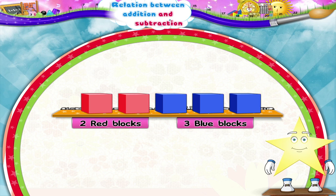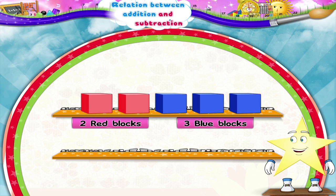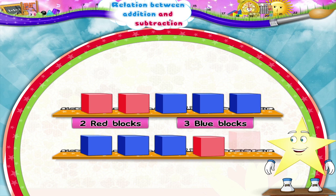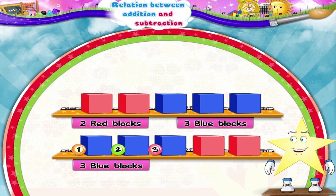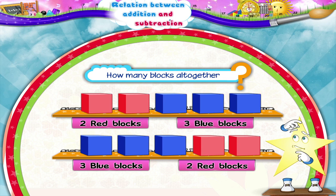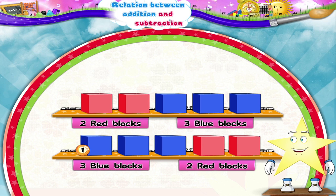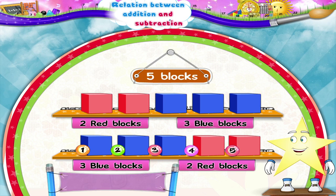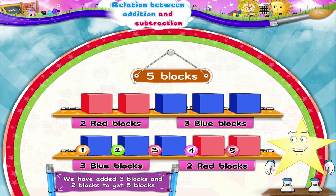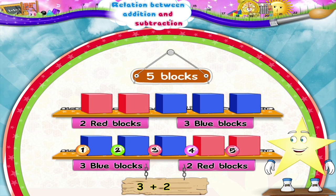Now, suppose we change the order, Starry, and put the blue blocks first and then the red blocks. One, two, three. Three blue blocks. And one, two. Two red blocks. How many blocks all together, Starry? One, two, three, four, five blocks. We have added three blocks and two blocks to get five blocks. Here, three plus two equals five. Addition again.